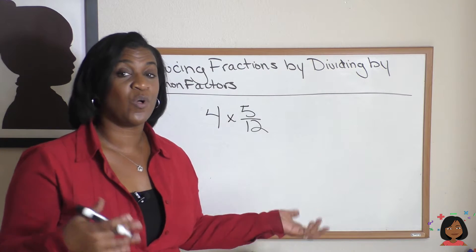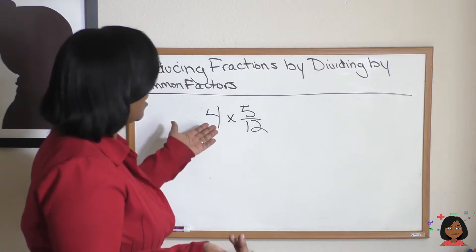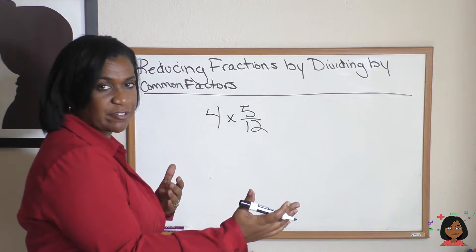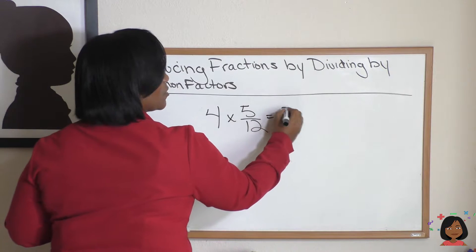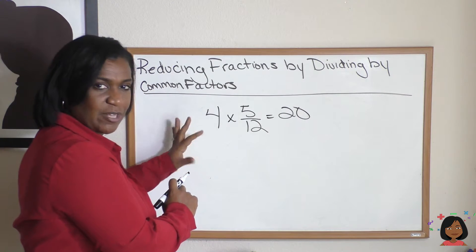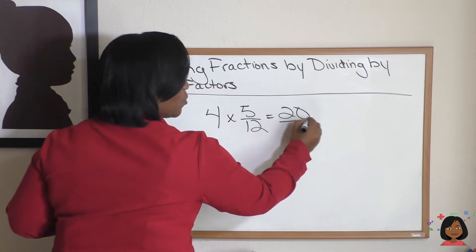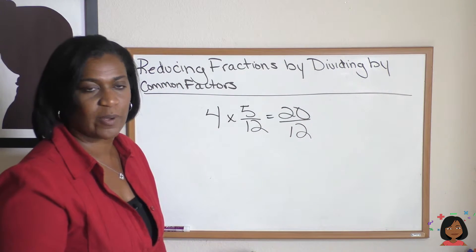It also works when you have a whole number multiplied by a fraction. So we know to do this, we multiply our numerators across and our denominators across. So 4 times 5 equals 20. And then 12 times, we pretend there's a 1 there underneath the 4. 12 times 1 is 12.